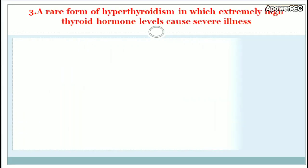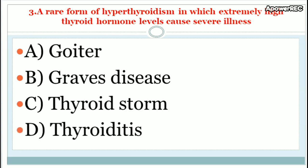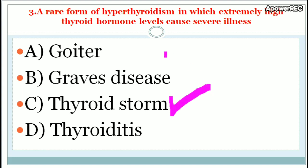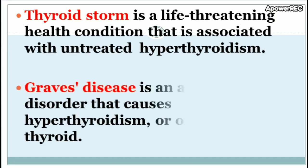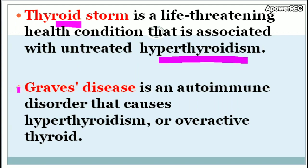Question: A rare form of hyperthyroidism in which extremely high thyroid hormone levels cause severe illness. The correct answer is thyroid storm. Thyroid storm is a life-threatening condition associated with untreated hyperthyroidism. The patient may present with high blood pressure, high temperature, and high pulse rate. Graves' disease is an autoimmune disorder that causes hyperthyroidism, or an overactive thyroid.